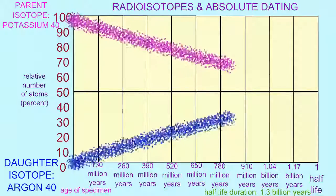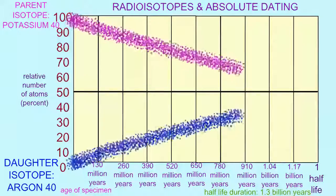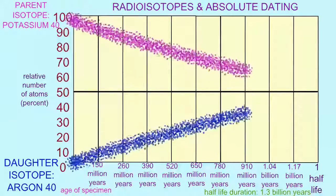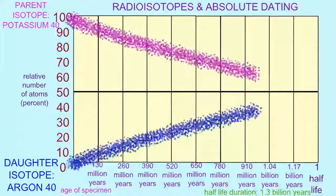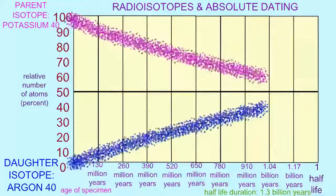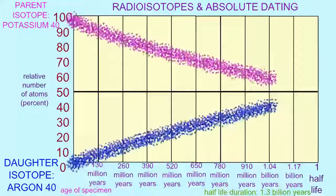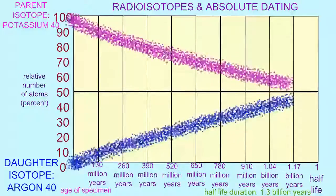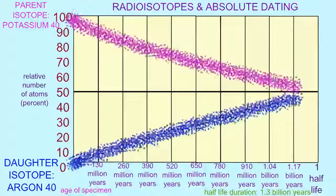The half-life of potassium-40 is 1.3 billion years. After 1.3 billion years, the amount of potassium present in a specimen would be half the original amount.